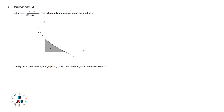Let f(x) = (6 - 2x) / √(16 + 6x - x²). The following diagram shows part of the graph of f. We need to understand that if this is the origin (0, 0), and if we can determine point A on the x-axis, then we can find the area by integration. At point A, the value of y equals 0, which means f(x) = 0.